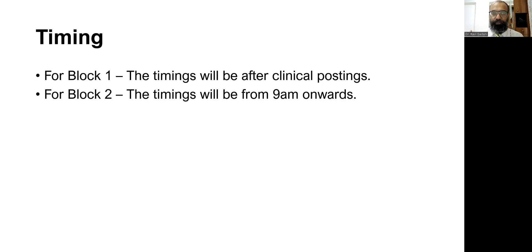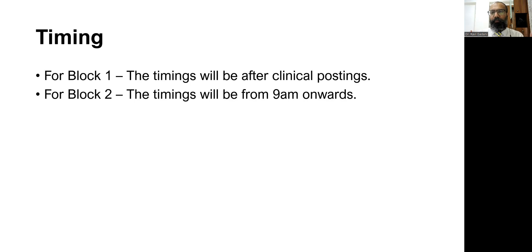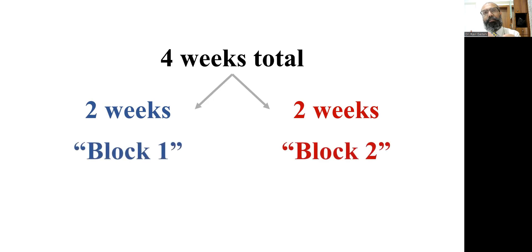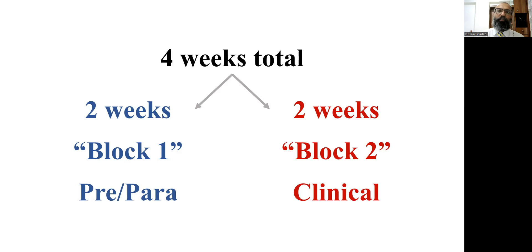Block one elective is in the subjects of pre and paraclinical subjects — the subjects of first year MBBS and second year MBBS. Whereas block two, or elective two, is in the third year subjects — they are clinical subjects. When you have block one elective, because it is in pre and paraclinical subjects, your clinical postings in the morning will continue as they are already going on. But for block two elective, which is the clinical subjects, your clinical postings for those 14 days will be suspended — they will not be in your schedule. During block two, the entire batch will not have any clinical posting; they will only be attending their electives. So, total four weeks of electives: two weeks for block one — pre and paraclinical — and two weeks for block two, which is clinical electives.